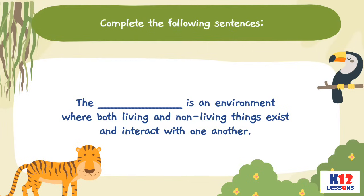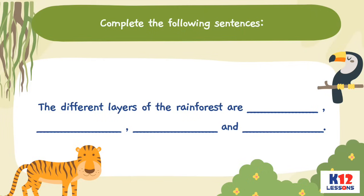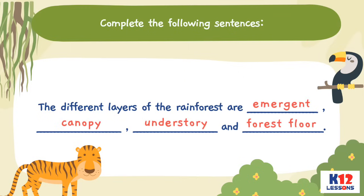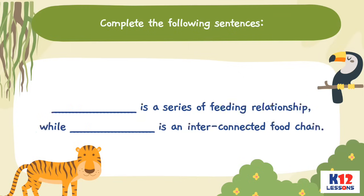Fill in the blanks. Complete the following sentences. The blank is an environment where both living and non-living things exist and interact with one another. The different layers of the rainforest are blank, blank, blank, and blank. Blank is a series of feeding relationships, while blank is an interconnected food chain.